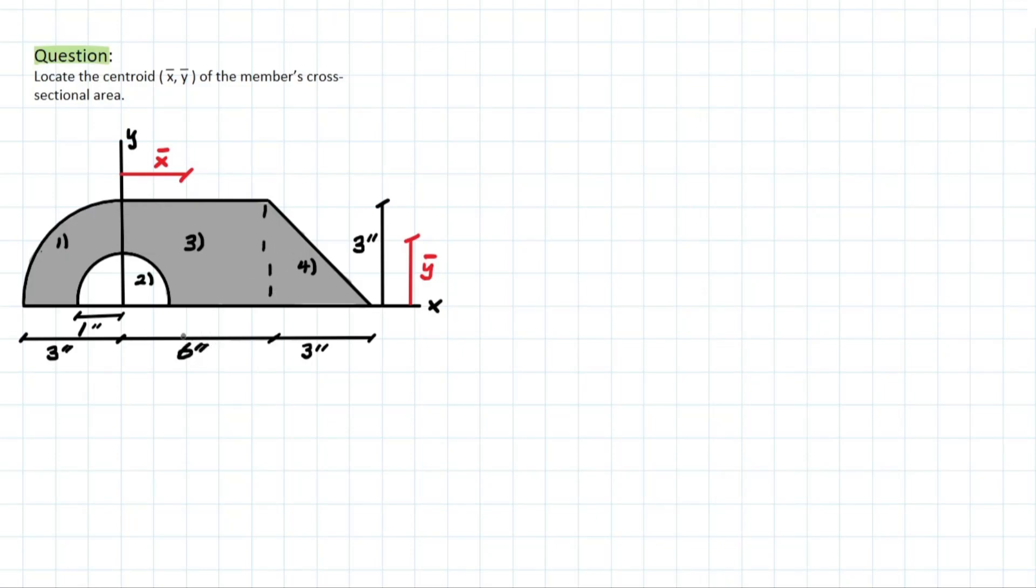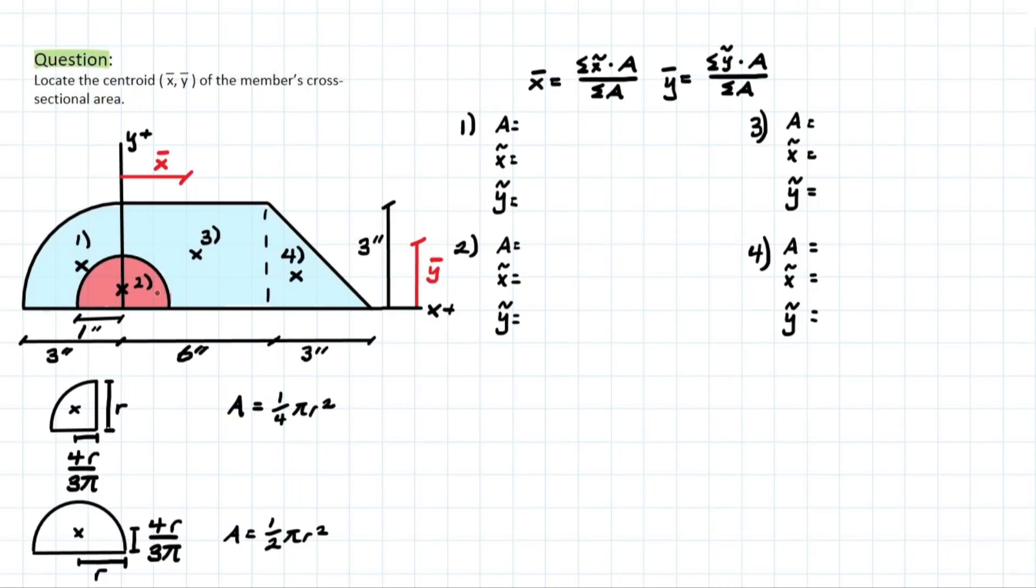And then also we can identify, you know, the approximate locations for where those x-tildas and y-tildas will be. So for a semicircle or a quarter circle, you have a location right about there. The semicircle would be somewhere around there. Your rectangle, you know where that is. It's going to be one half these directions. And then another centroid is located right here for that triangle.